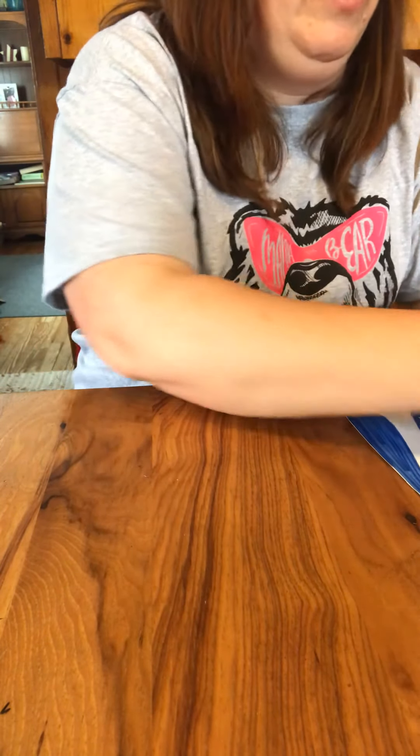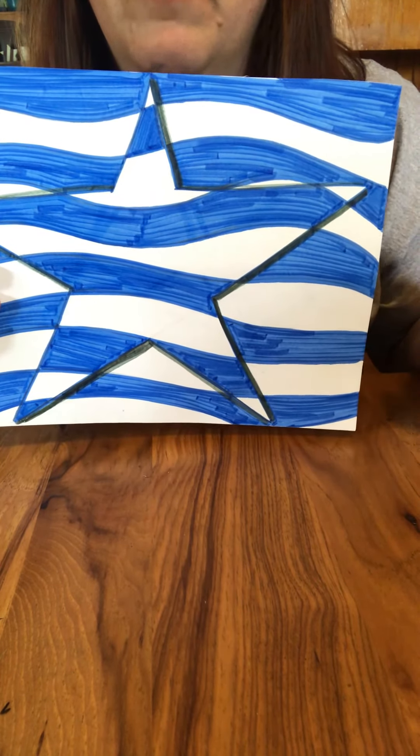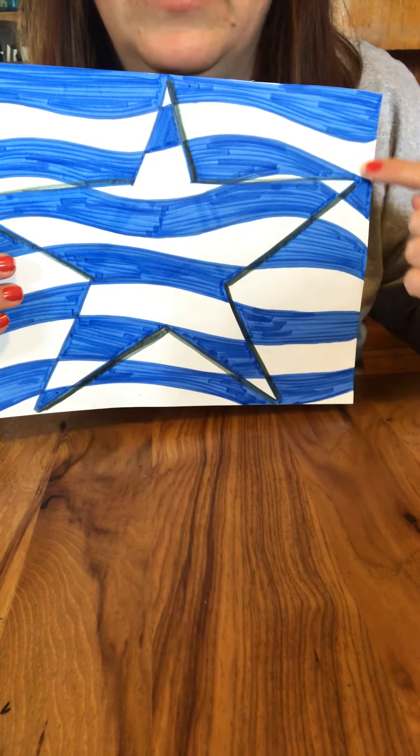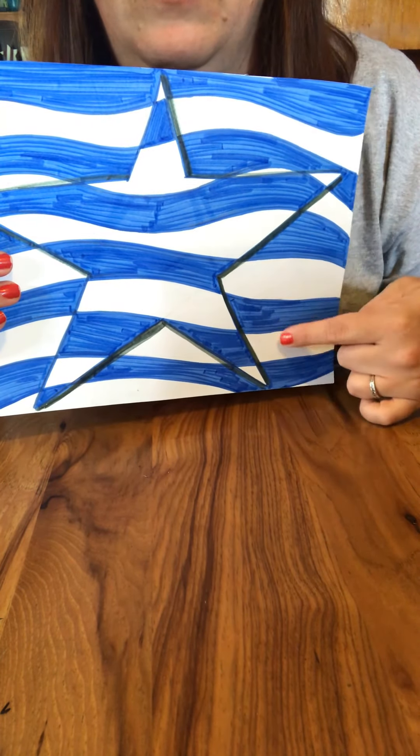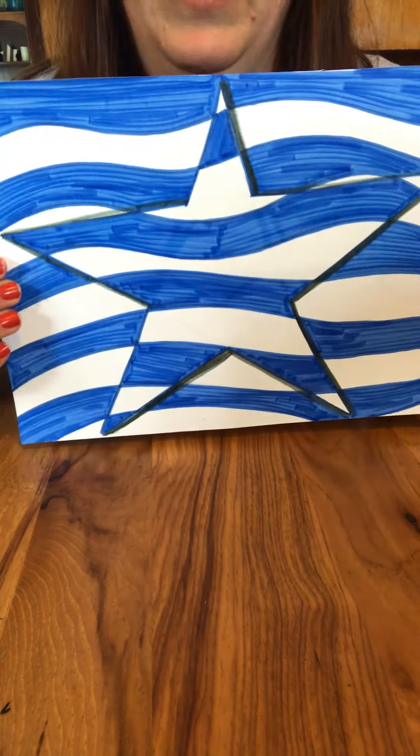One other thing I wanted to show you on here is if you want it to really pop off the page take a black marker or crayon whatever you're using and outline just one side of the star. Outline just one part and that'll make it look like it's popping off the page even more.